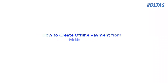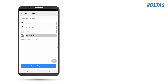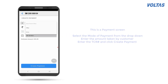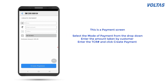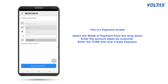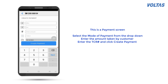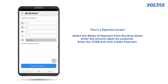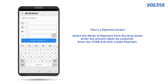How to Create Offline Payment from Mobile App. This is a payment screen. Select the mode of payment from the drop-down, enter the amount taken by customer, enter the TCR, and click Create Payment.